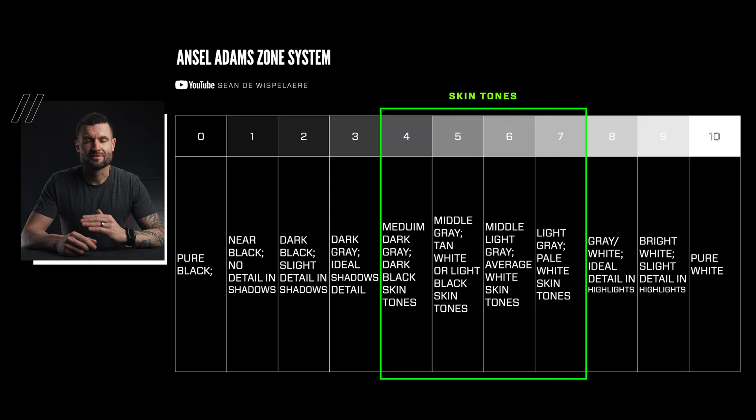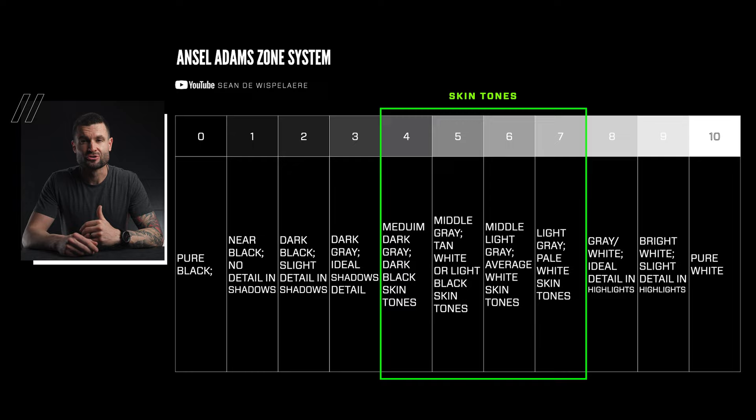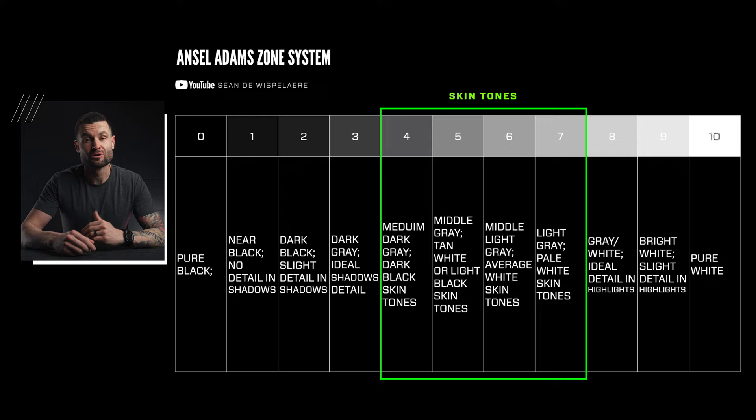The OG himself, Ansel Adams, put together a general exposure chart. The basic understanding is that it runs from left to right, zero to ten, where zero is pure black, ten is pure white, and in between are the different shades of grays, blacks, and highlights. I've also highlighted skin tones on the chart for quick reference, because those are some of the more important things to get dialed in. How I use this chart in correlation with zebras: take any number on the chart, multiply it by ten, and you get a zebra value.